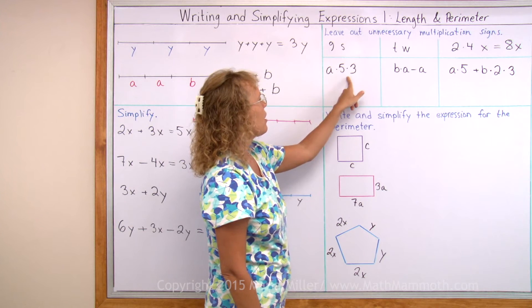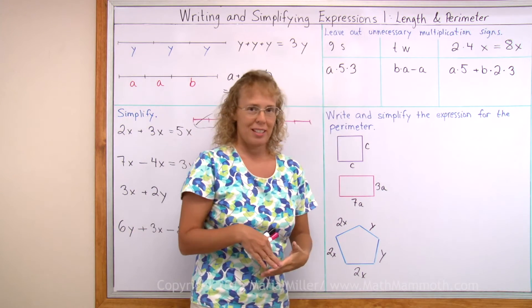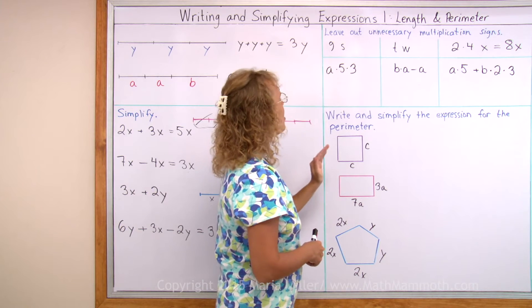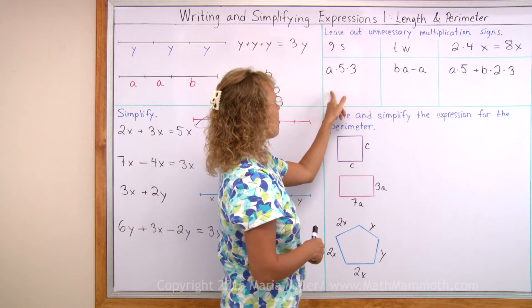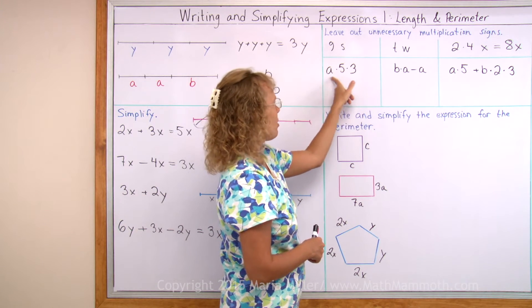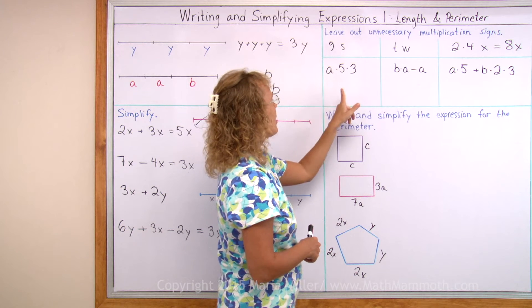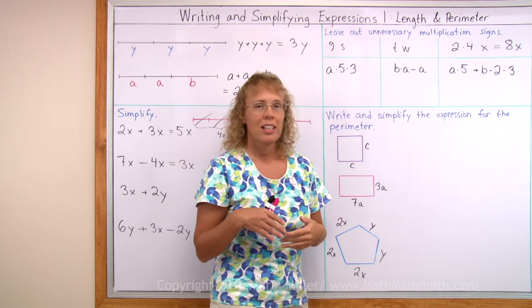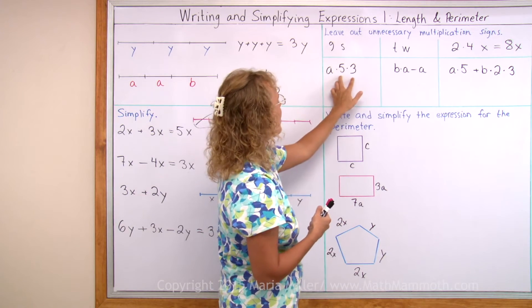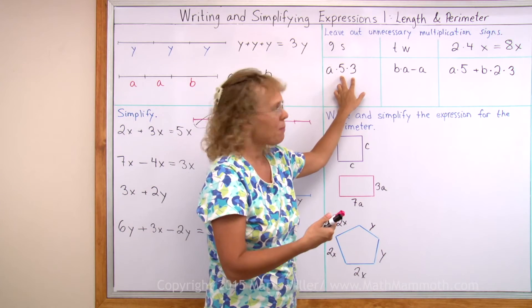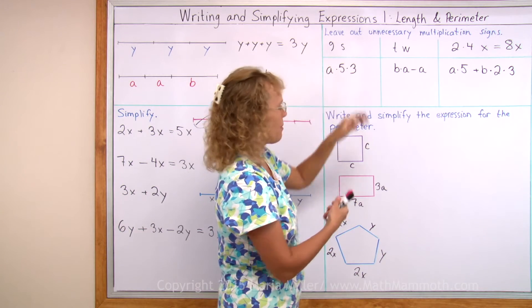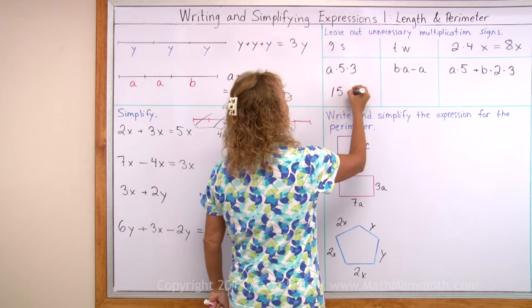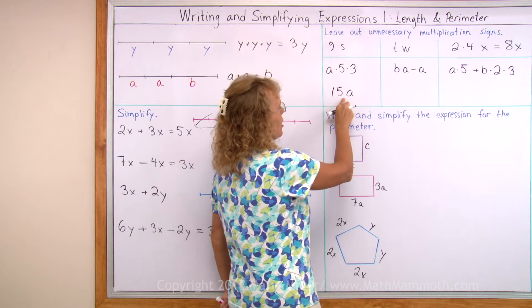a times 5 times 3 — we can simplify it. It is customary to write the numbers in front of the letters, so I would write it as 5 times 3 times a. And also I can simplify by multiplying 5 times 3, which is 15. So that's 15 times a, written as 15a with no multiplication sign.